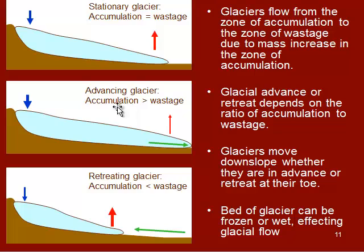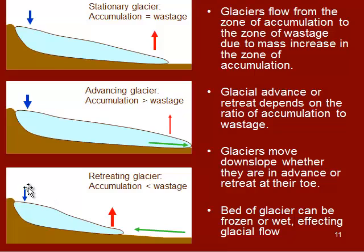In the case of an advancing glacier, more ice is inputting than is melting off. We could have way more accumulation — very heavy snow years repeatedly — or less ablation happening due to cooler temperatures year-round, so overall less wastage than accumulation. If a glacier is retreating or shrinking, accumulation decreases but wastage or ablation increases, perhaps due to increased year-round temperatures or less snowfall. Either one of those could cause a glacier to retreat.